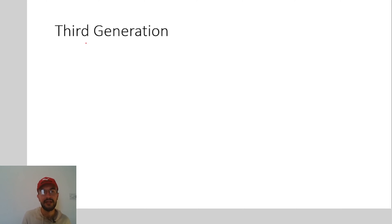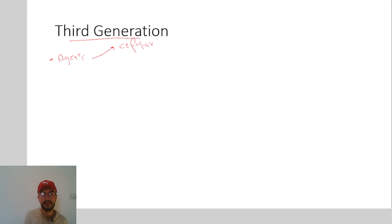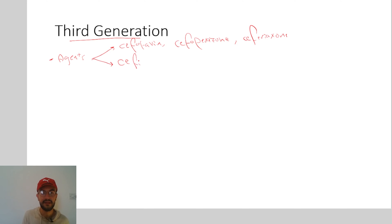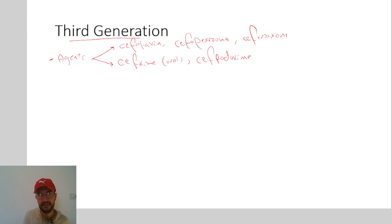Now let's talk about the third generation cephalosporins. The agents of this generation include cefotaxime, cefoperazone, and ceftriaxone. They also include cefixime, which is an oral drug of the third generation, cefpodoxime, and ceftazidime.